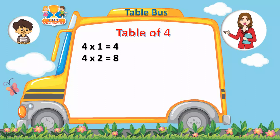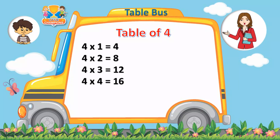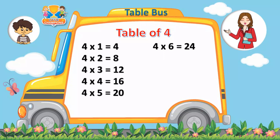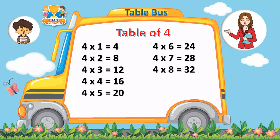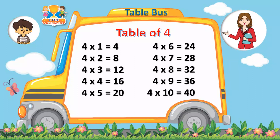Four ones are four. Four twos are eight. Four threes are twelve. Four fours are sixteen. Four fives are twenty. Four sixes are twenty-four. Four sevens are twenty-eight. Four eights are thirty-two. Four nines are thirty-six. Four tens are forty.